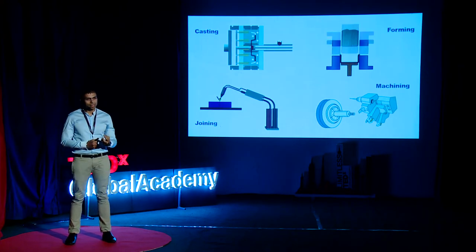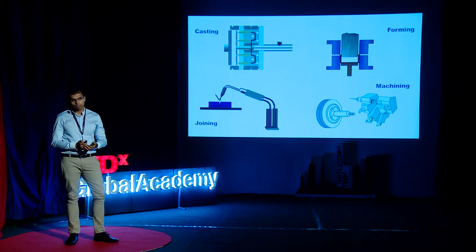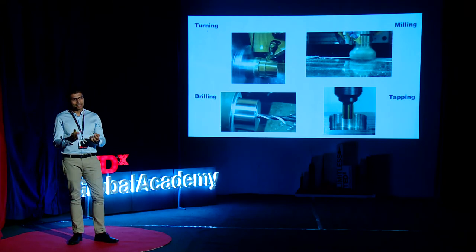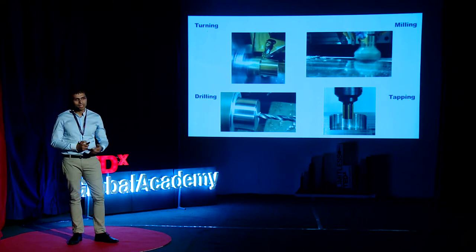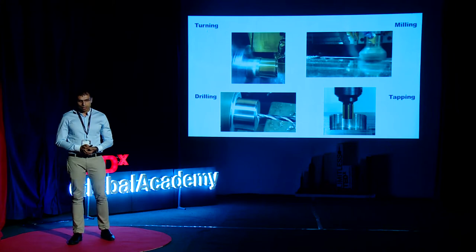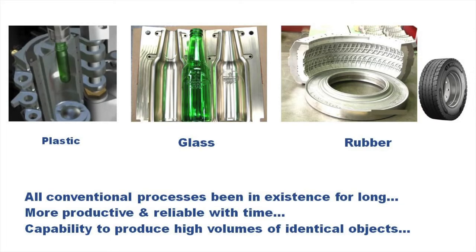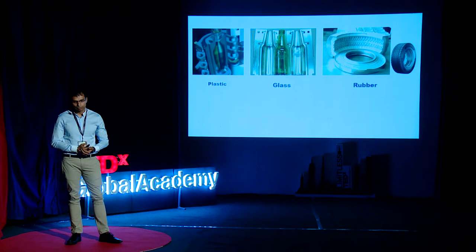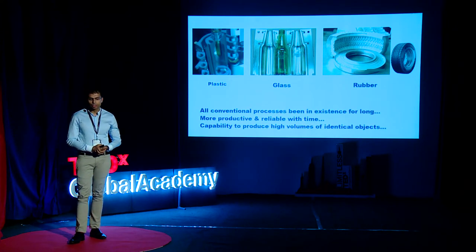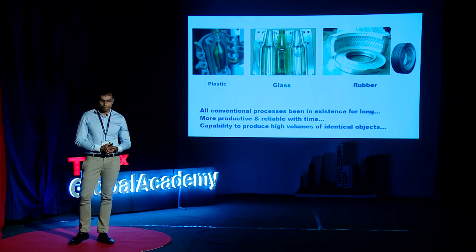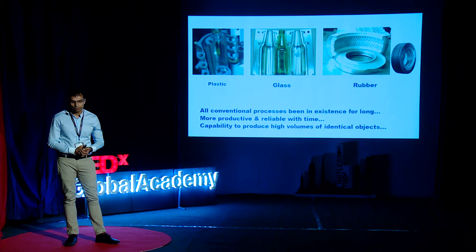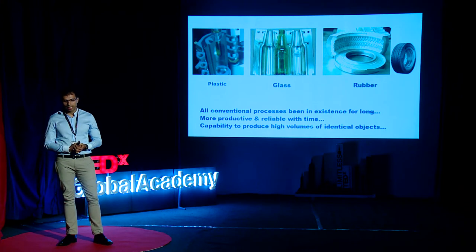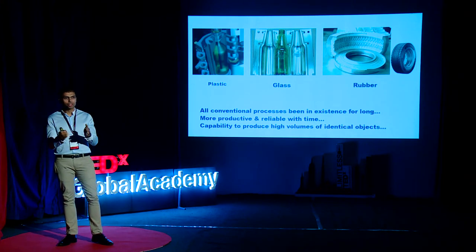Some of the other conventionally made parts are also subjected to subtractive techniques such as turning, milling, drilling and tapping to remove the excess material that is not necessary and finally arriving upon the parts. The non-metal parts such as plastics, glass and rubber are conventionally moulded into the shape that you would need. These are all conventional processes which have been in existence for many decades now and with time have gotten more productive and reliable.